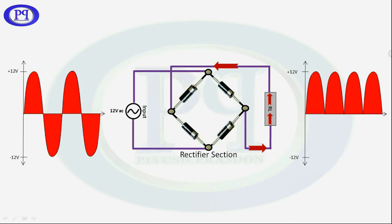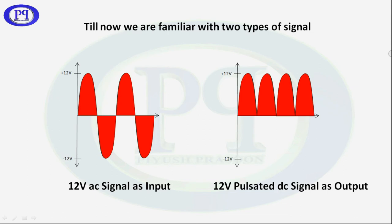So now we are familiar with two types of waveform. The first is the AC input signal and the other is rectified signal, which is also known as pulsated DC signal.